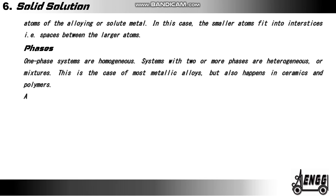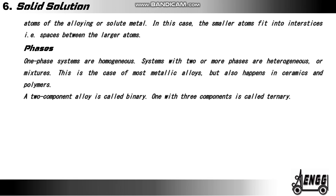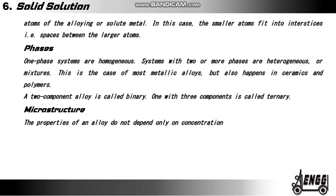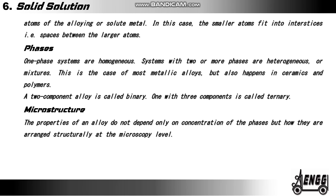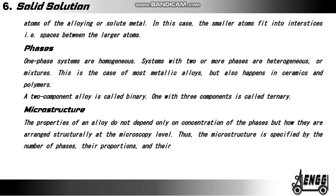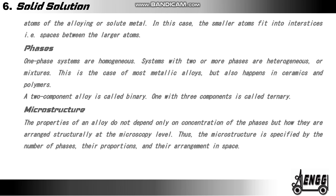A two-component alloy is called binary. One with three components is called ternary. The microstructure properties of an alloy do not depend only on the concentration of the phases but on how they are arranged structurally at the microscopic level. Thus, the microstructure is specified by the number of phases, their proportions and their arrangement in space.